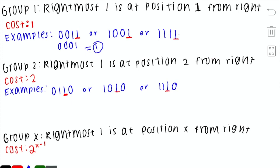In group 2, the rightmost 1 is at position 2 from the right, representing 2 to the power of 1 (i.e., 2). Any city in group 2 can be connected to city 2, and performing the bitwise AND gives a cost of 2. Generalizing: for group x, where the rightmost 1 is at position x from the right, the cost is 2 to the power of x minus 1.